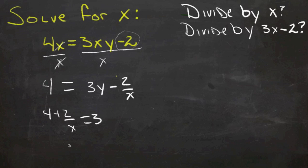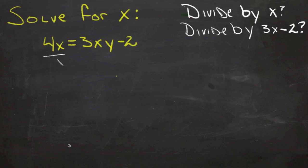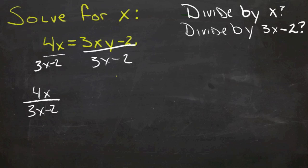We could try dividing by your 3x minus 2. Let's try that. What if we divided both sides by 3x minus 2? Now, first of all, over here, we're going to have 4x over 3x minus 2 because we can't cancel either one of those.